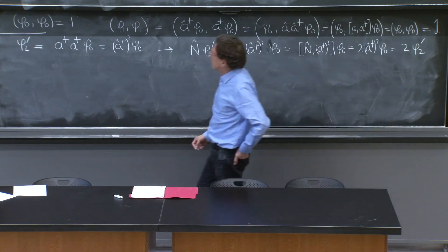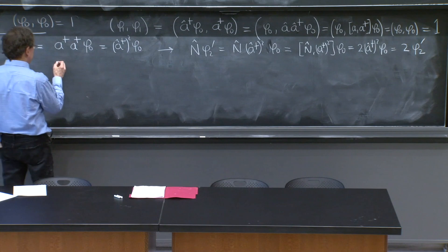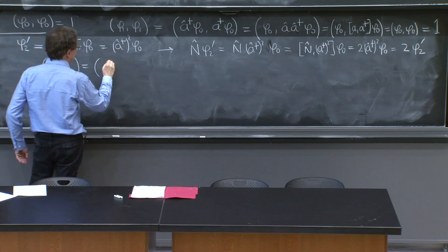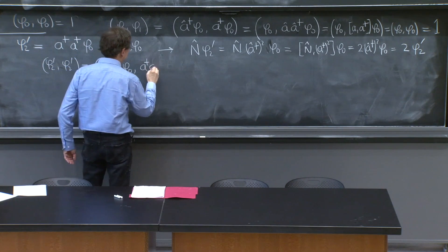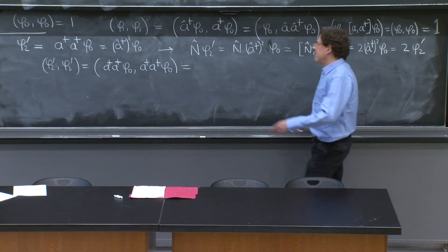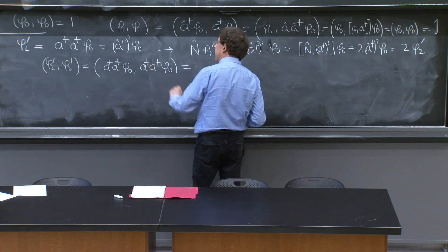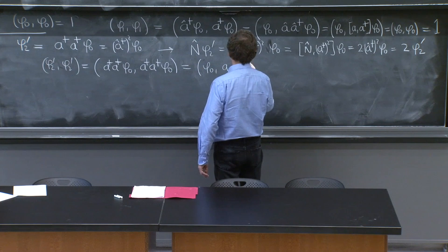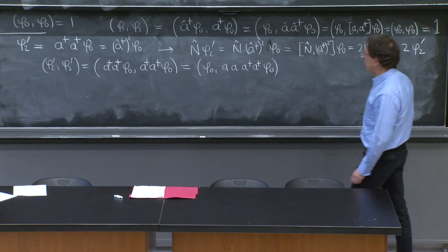Is it normalized? Well, let's try it. Phi_2 prime phi_2 prime is equal to a dagger a dagger. Let me not put the hats. I'm getting tired of them. A dagger a dagger phi_0. Now, I move all of them. This a dagger becomes an a. And the next a dagger becomes an a here. So this is phi_0, a, a, a dagger, a dagger phi_0. Wow, this looks a little more complicated.